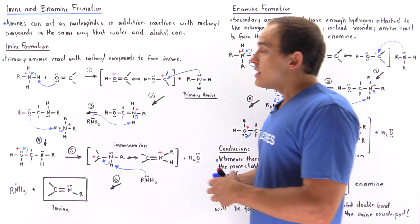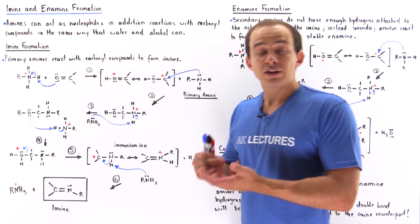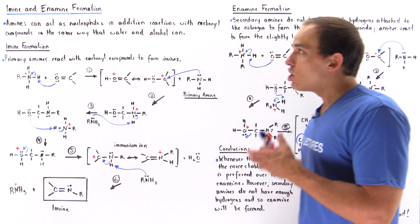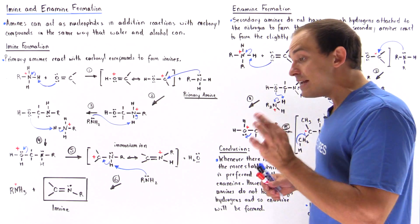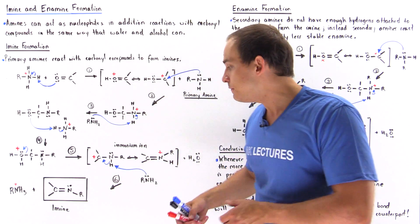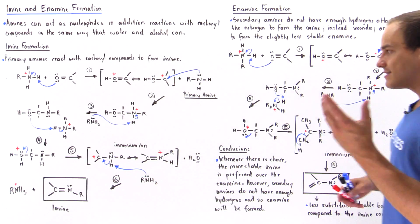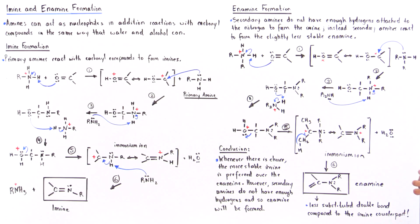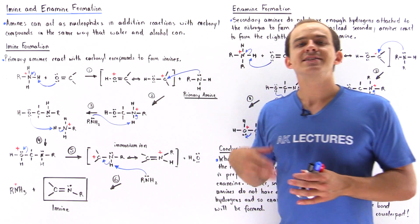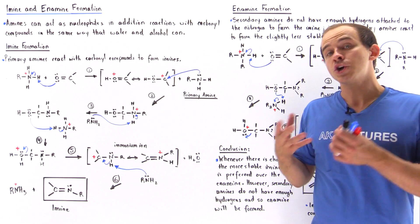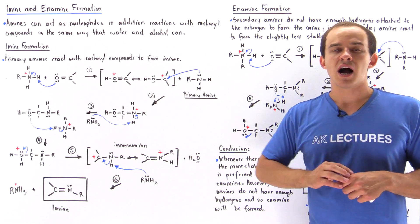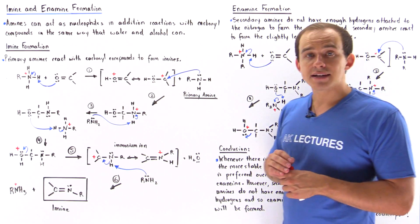So we see that not only water and alcohols can react as nucleophiles with carbonyl compounds, but amines can as well. However, it matters what type of amine we use: if we use a primary amine, we form the imine; if we use a secondary amine, we form the enamine. Finally, in the next lecture, we'll examine what happens when we use a tertiary amine — one that does not contain any H atoms — reacting with a carbonyl compound.